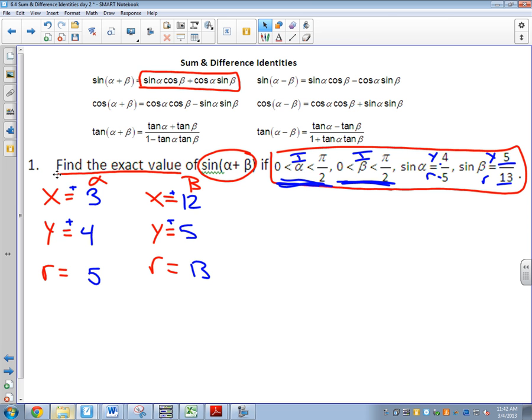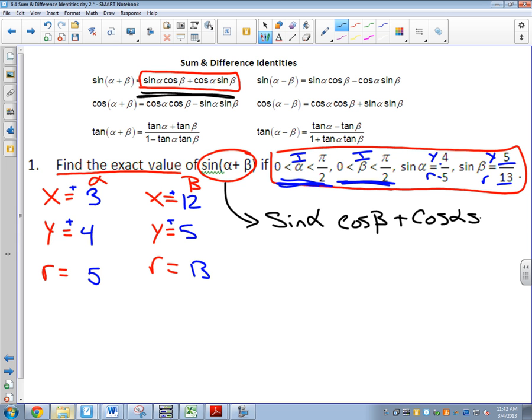Once I've got that set up, then I'm actually going to do the problem. It says, find sine of alpha plus beta. That means I'm using that formula. Sine of alpha, cosine of beta, plus cosine of alpha, sine of beta.